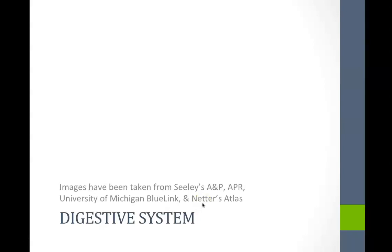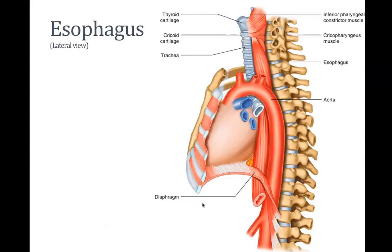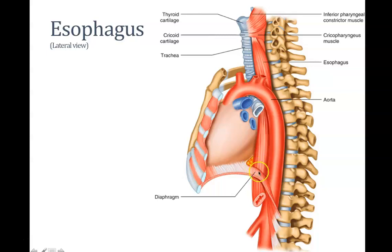Let's move into the digestive system, starting with the esophagus. We'll go through the structures you will see in the cadaver lab. Food first enters the oral cavity, moves back into the oropharynx, then into the laryngopharynx, and down into the esophagus. It moves posteriorly to the heart, pierces the diaphragm, and the opening for the esophagus is called the esophageal hiatus, bringing it down into the abdominal cavity.